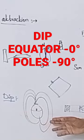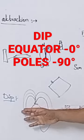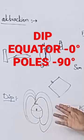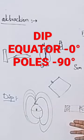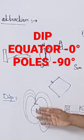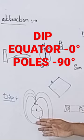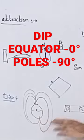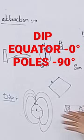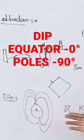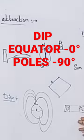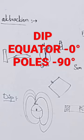Dip is the magnetic intensity of the earth's field. The influence of the magnetic field is effective. At the horizontal plane, dip is equal to 0 degrees, and at the pole it is 90 degrees.